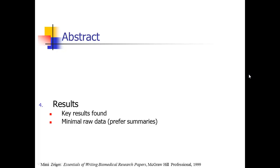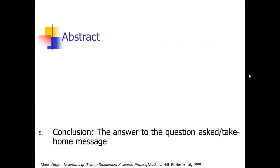Then you pull something from the results section — it will be very minimal. Give a couple of key results; you won't be able to cram a lot of numbers in. Summarize everything, maybe give one or two key numbers like the main effect size or the main p-value. Then you have usually a one-sentence conclusion: answer the question you asked, or say whether your hypothesis was proven. What did your data show relative to that question?